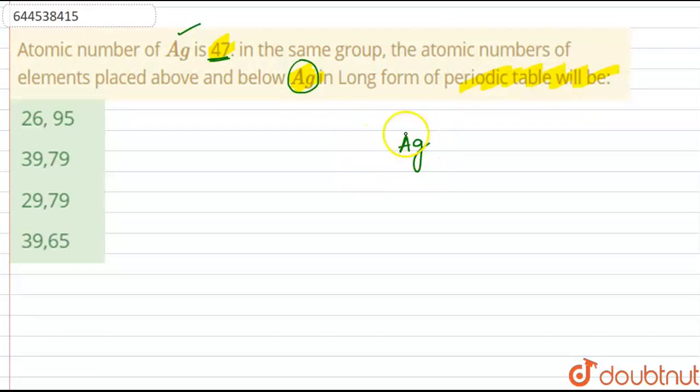So let this silver be here. Let its above element be X and its below element be Y and its atomic number is 47. And we have to find out the atomic number of this X and Y. So generally, this silver, it is a D block element.